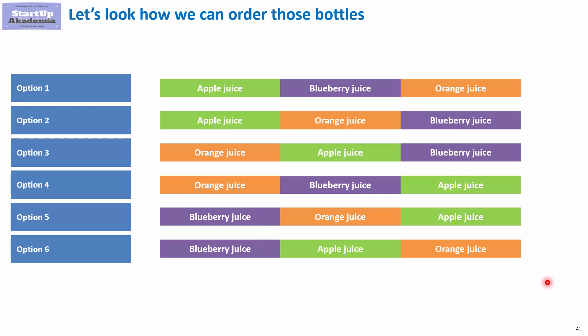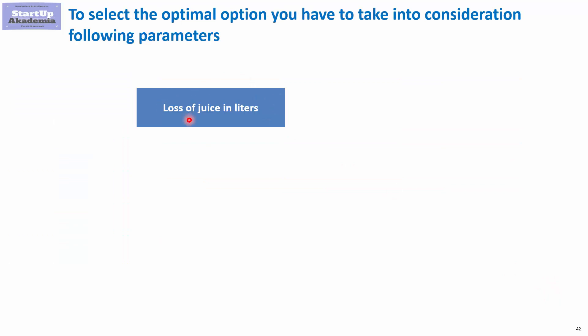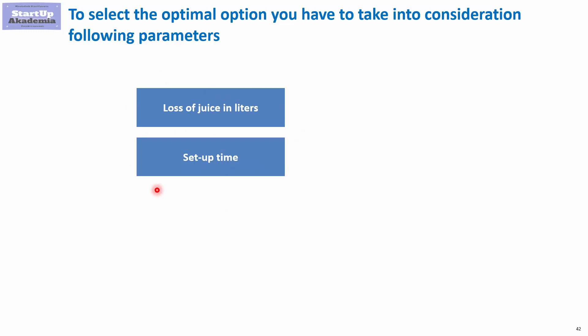Once you have the optimal production batches, you need to arrange them properly. It's worth considering certain factors that impact the optimal sequence. The first thing to take into account is the loss of product due to cleaning the production line or changing the setup — in this case, the loss of juice in liters. The sequence starting with apple juice, then orange juice, then blueberry juice gives you the lowest waste. Another important factor is setup time.